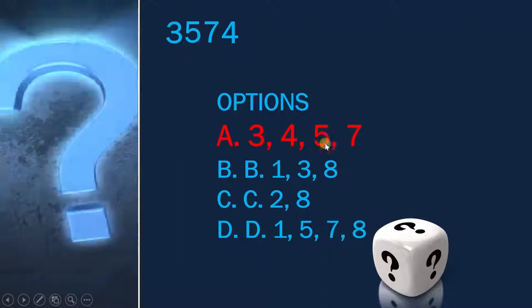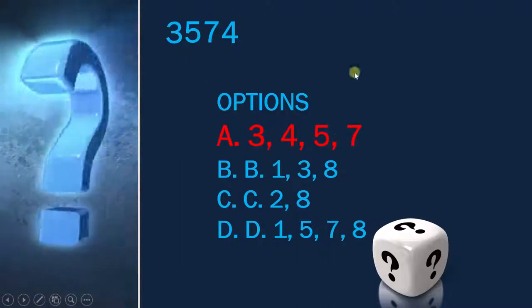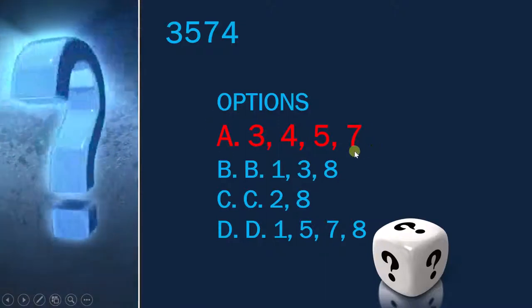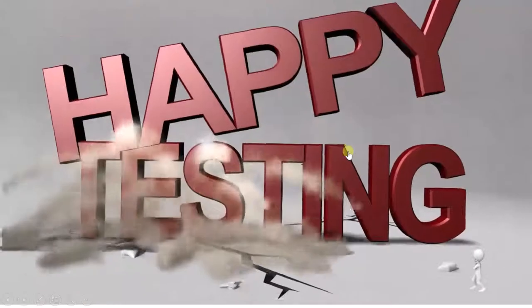3, 4, 5, and 7. So 3, 4, 5, and 7, all the combinations are here. So this is how you can reduce your time and find the answer very effectively and in very less time. That is it from this particular example and I will see you with the next topic. Until then, happy testing.